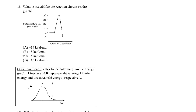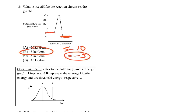What is the delta H for the reaction shown on the graph? Delta H is from the reactants to the products — the fact that it's downhill means it's going to be negative, and it's by 5. So the answer is negative 5 kilojoules per mole. That's because delta H is defined as final minus initial: 5 minus 10 = negative 5.